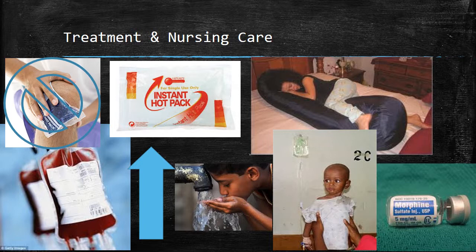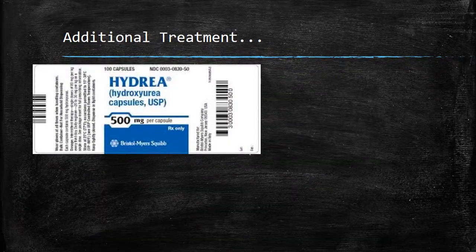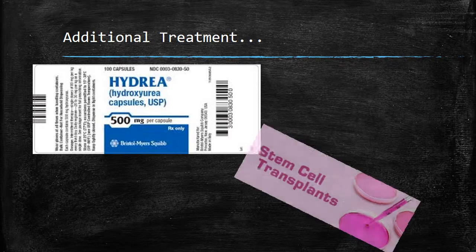Monitor reticulocyte count regularly to evaluate bone marrow function. It is recommended that these children receive pneumococcal and meningococcal vaccines as well as yearly flu shots because of their decreased immunity due to the poorly functioning or absent spleen. Oxygen is used to try and prevent sickling from low oxygenation, but only if there is hypoxia. Severe hypoxia must be prevented, or it could trigger massive systemic sickling which can be fatal. Oxygen cannot reverse sickling or reduce pain because it can't get to the sickled cells anyway, and prolonged use depresses the bone marrow, making the anemia worse. For additional treatment, we may use hydroxyurea or stem cell transplants. This concludes Chapter 43, Part 1.